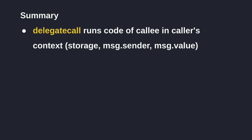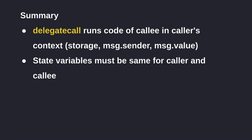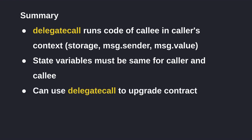In summary: delegatecall runs the code of the callee using the caller's context. The state variables of the callee must be in the same order as the caller. And you can use delegatecall to upgrade contracts. That's all for this video — if you have any questions or feedback, let me know in the comments below. Have a good night and I'll see you in the next video.